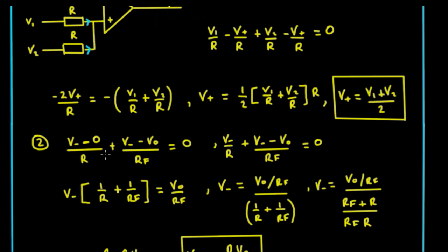So that can be written as v_minus/r + (v_minus - v_out)/rf equals zero. We can take out our common factor of v_minus and we get this here. We can take the v_minus/rf across the other side, and then we can divide through by this here. That leaves us v_minus equals this here.